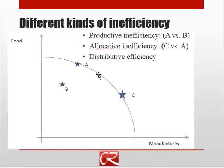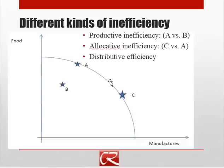A movement from A to C, if C is preferred, is an increase in allocative efficiency. That's another type of efficiency needed for the economy to be efficient overall. One condition is: are we producing whatever we're producing in a smart way? That means we're at A rather than B. And then, are we producing the right mix of goods? That's being at C rather than A.